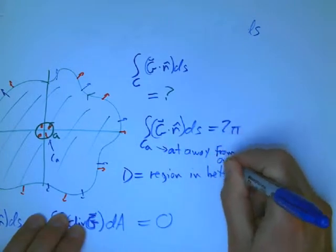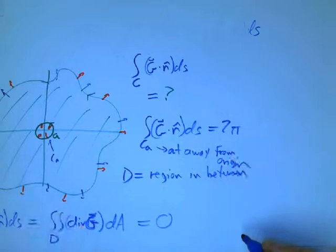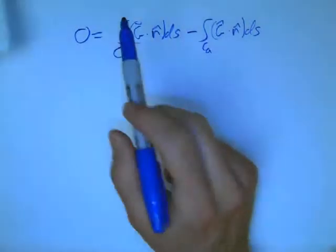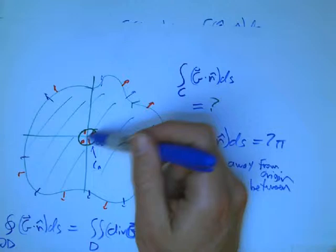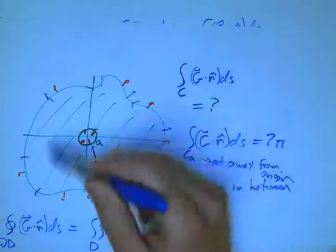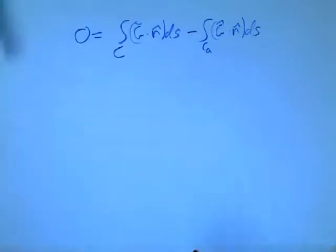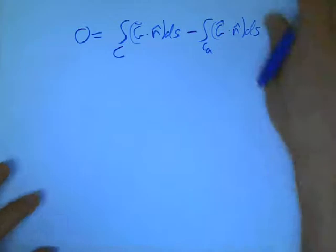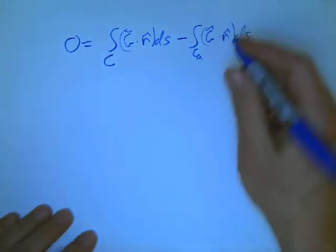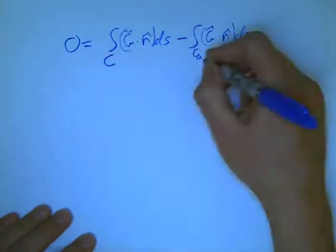Out, away from the origin. And the orientation we would have gotten from Green's theorem would be going inward toward the origin. Because as far as D is concerned, the region in between, that's outward. I know inward and outward are kind of ambiguous terms, but hopefully you see what I mean.